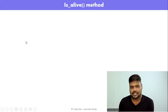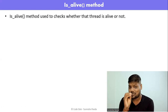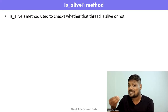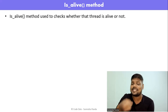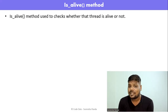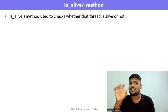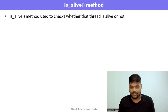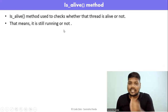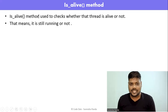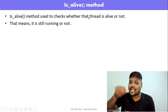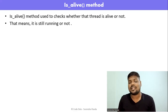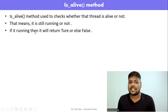The is_alive() method is used to check whether a thread is alive or not. If a thread is executing, we can say it is alive. If a thread is not executing, we can say it is not alive. For example, if I created a thread T1 but haven't started it yet, it is not alive — it returns false. If it is running, it returns true.